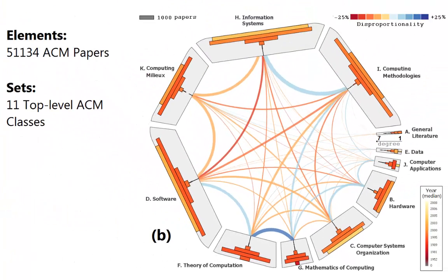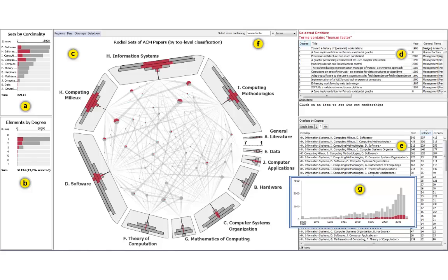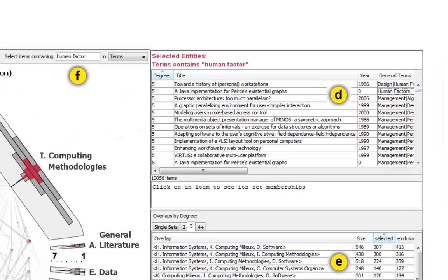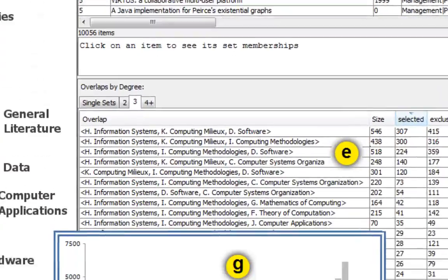The elements aggregated in the bars or in the links can be explored in detail using interaction. An overview plus detail interface shows details about the selected elements in a tabular list. The attributes of these elements can be analyzed further in additional views.